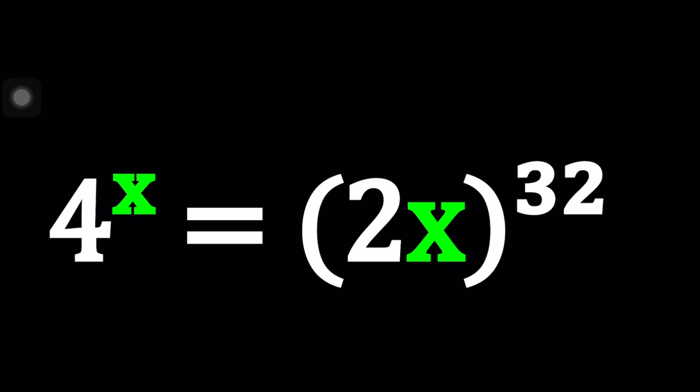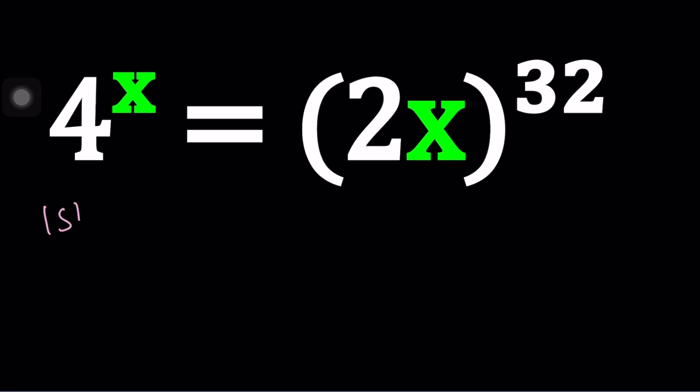We have this equation: 4 to the power x equals the quantity 2x to the power 32. So 2x is in parentheses, and we're going to be solving for x. I'll be presenting a couple different methods. First method is going to look at this as a ratio, or in other words, put the x's on the same side.